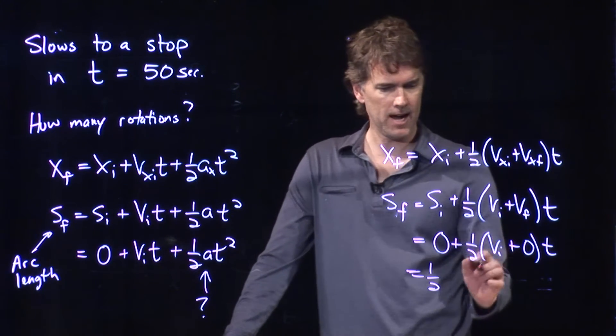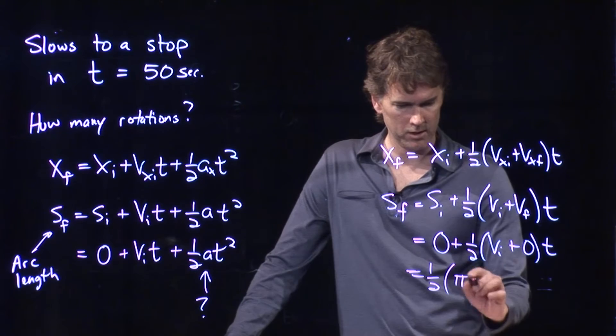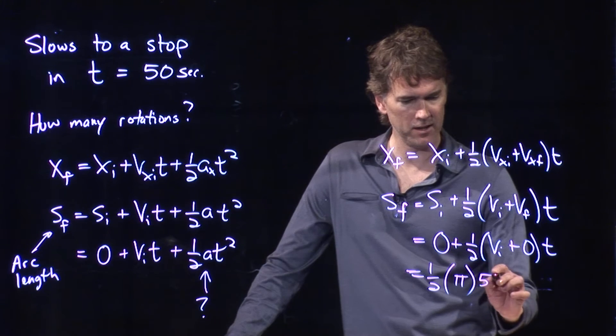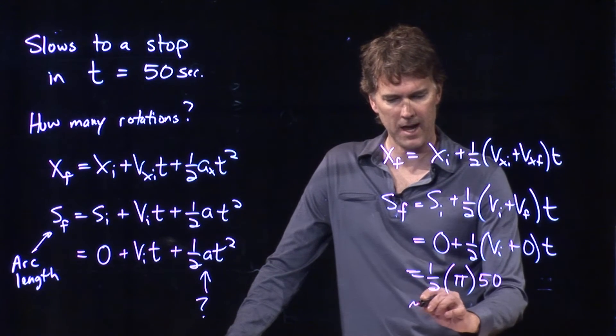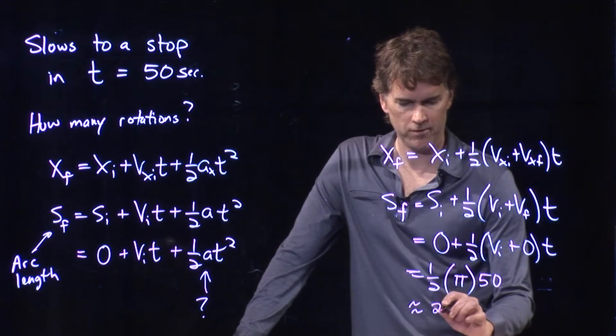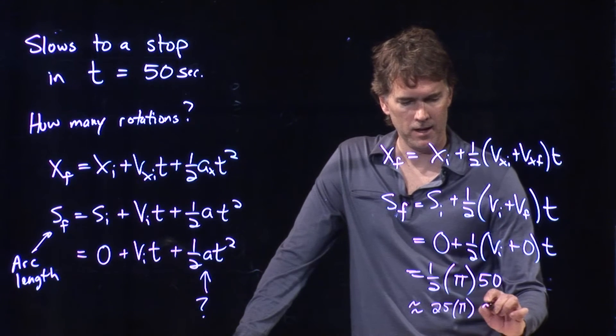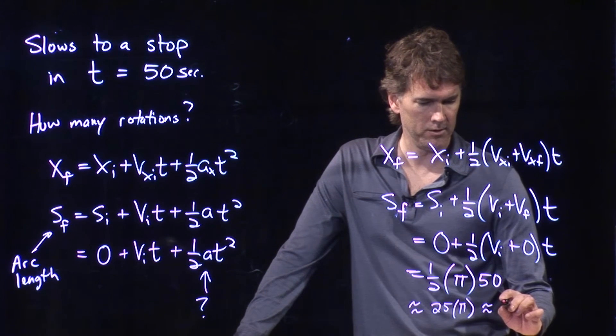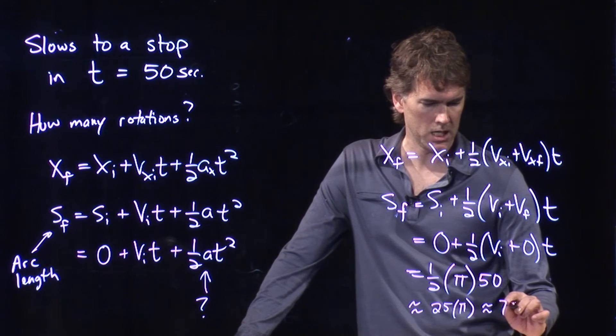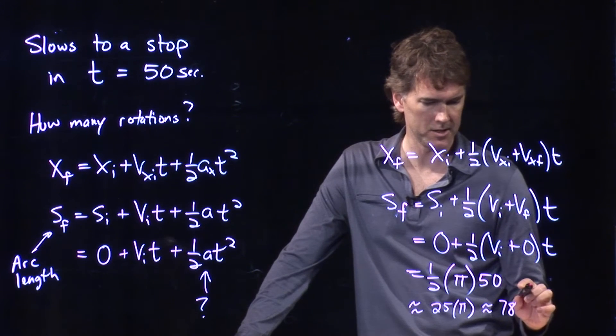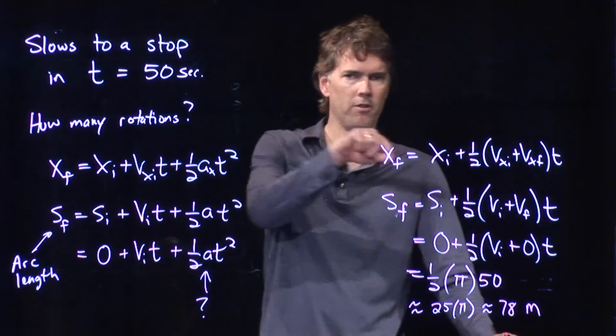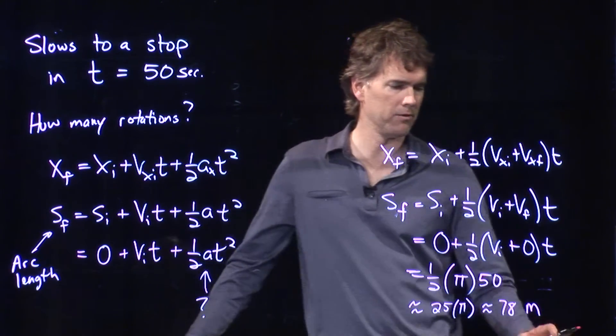We have ½ times vi which we just found was strangely π meters per second and t we said was 50 seconds. So ½ times π times 50, well what's that? Half of 50 is 25, 25 times π, that's a little bit more than 75, we'll say maybe 78, somebody punch that into your calculator and tell me what you get. And this is in units of meters. That's how far you've gone around the edge of the merry-go-round.